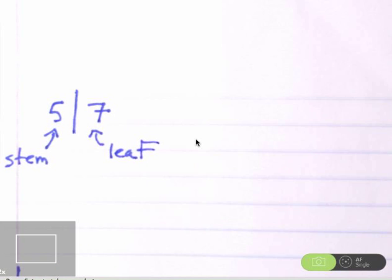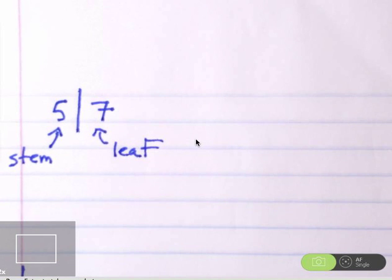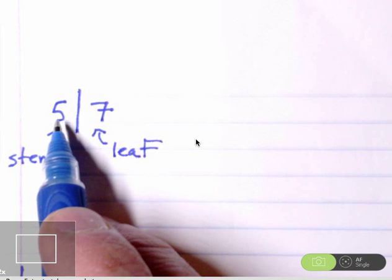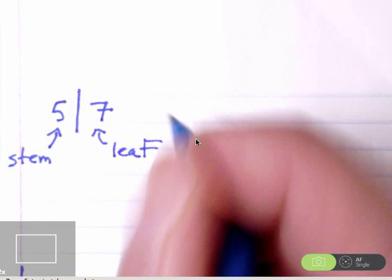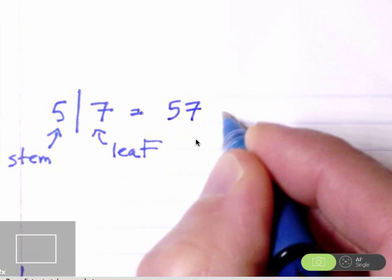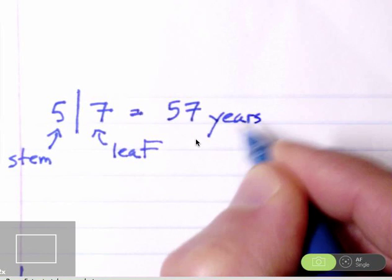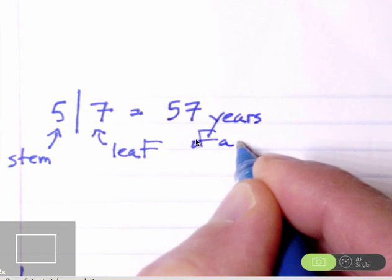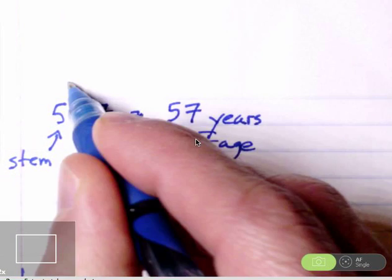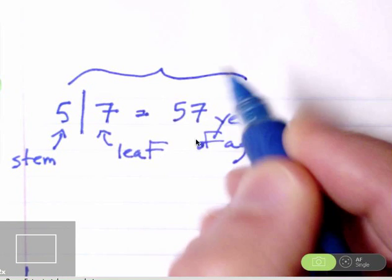And what we're going to do is represent all of the observations in the data set by using the appropriate stem and the appropriate leaf. The first thing we should do though is make a key. So if you have a five for a stem and a seven for a leaf, what that represents is 57 years of age. So this is called a key. When you make a stem and leaf plot, you should include a key.